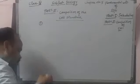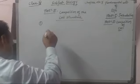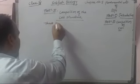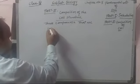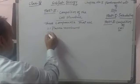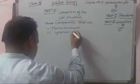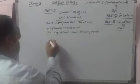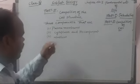Primarily, a cell is made by three components. The first component is the cell membrane. The second one is the cytoplasm and its components. And the last one is the nucleus. So there are three structures that form the composition of the cell.